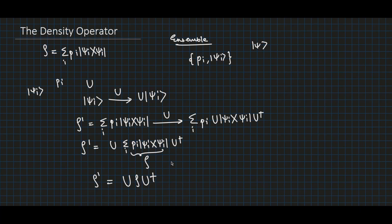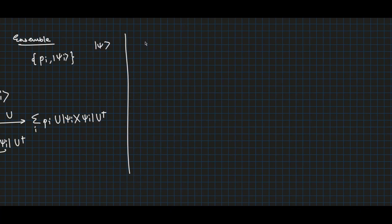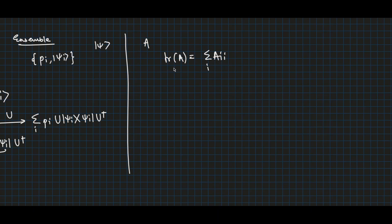Now let us define an important matrix function known as the trace of a matrix. For a matrix A, the trace of A is defined to be the sum of its diagonal elements. That is, Tr(A) = Σ_i A_ii, where A_ii represents all the diagonal elements.